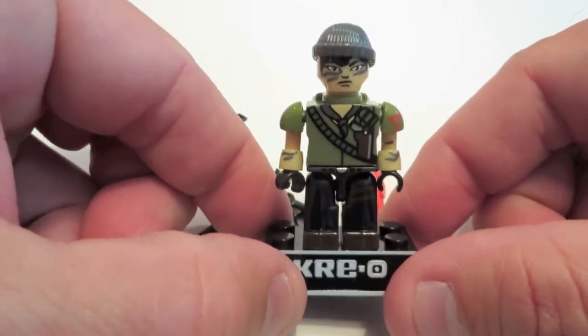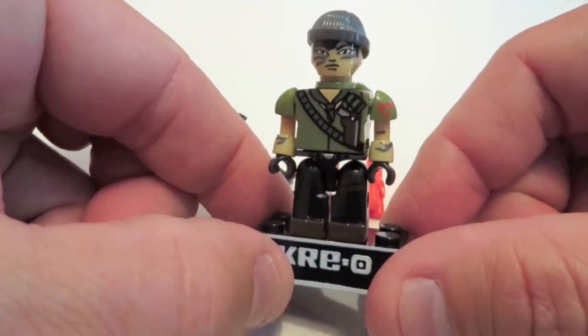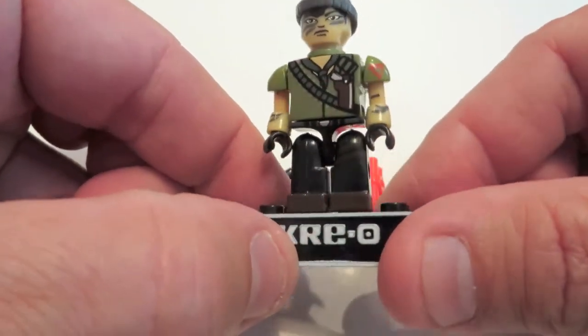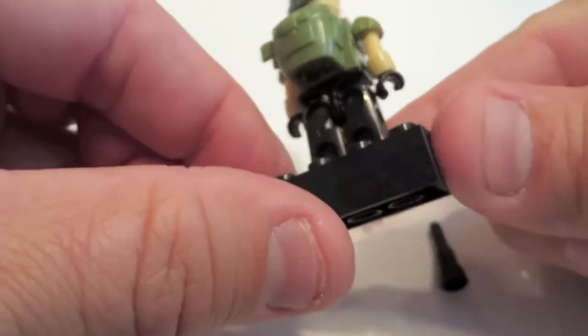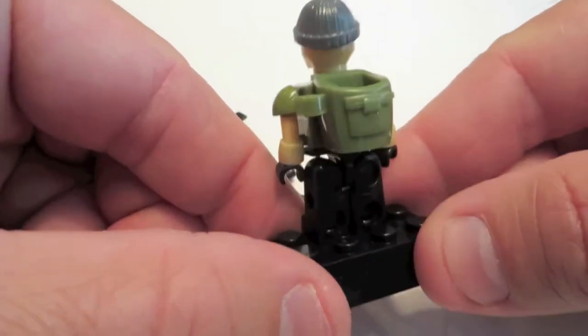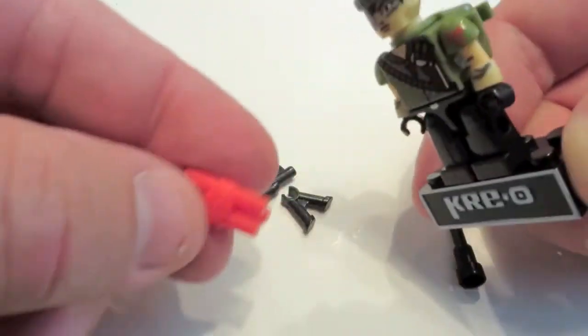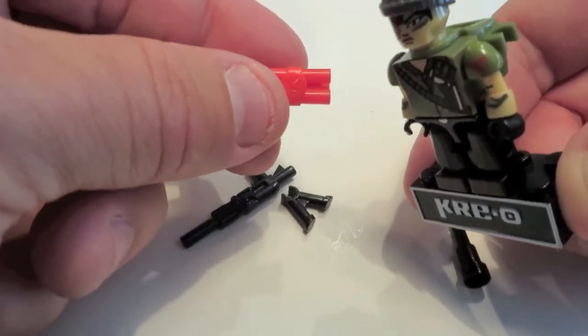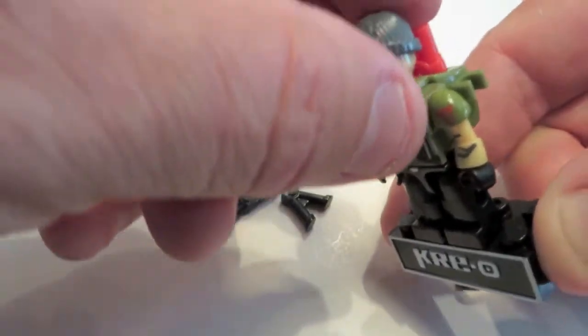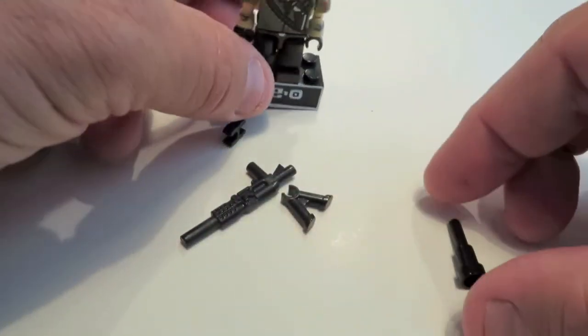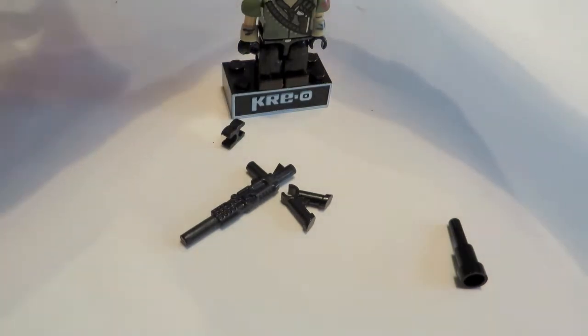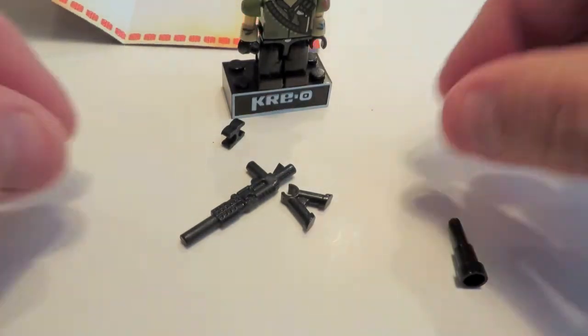Okay, so there's Tunnel Rat. It's got the printing on the front with the pistol. There's a little backpack and a beanie hat. And he comes with a little pack of dynamite which we'll put in his backpack, hopefully not lit.